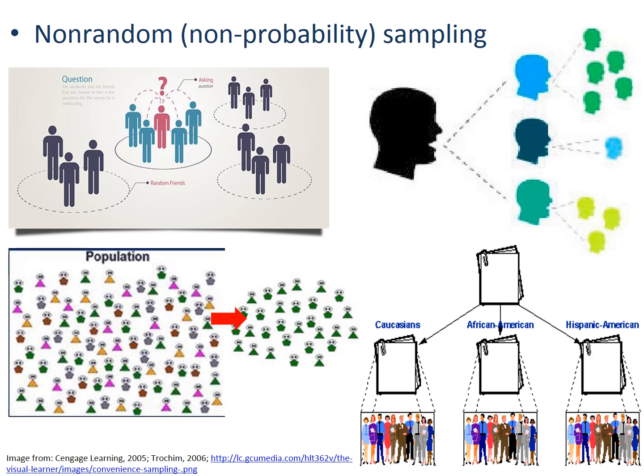So the four sampling frameworks we just reviewed randomly select the sample, meaning each individual in your population has the same probability of being chosen. Although random sampling is ideal — because if people are chosen randomly with equal chances, your sample would be most similar to the nature of your population — this is not always a practical option. A lot of times people use non-random or non-probability sampling, which means not everyone has the same probability to be selected.